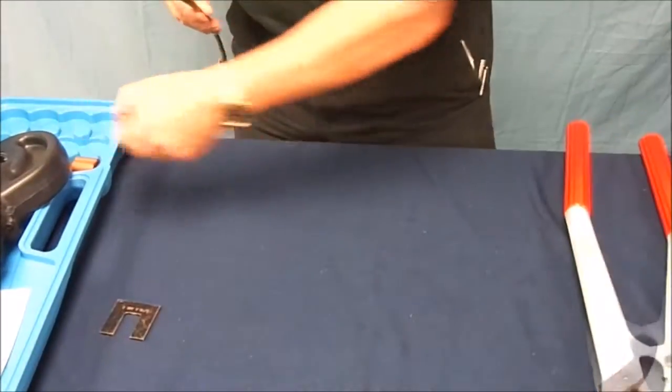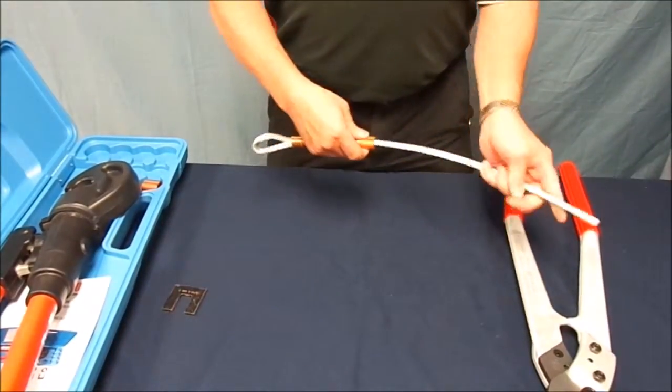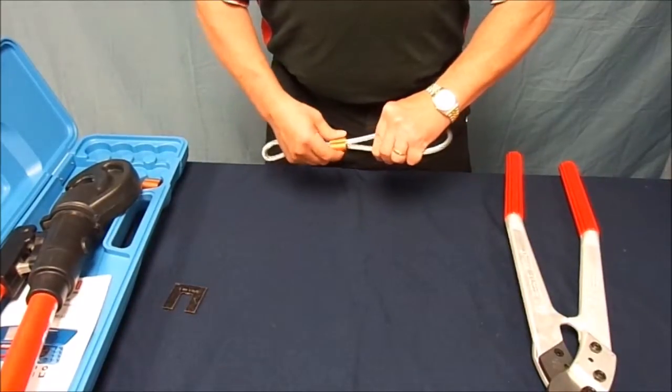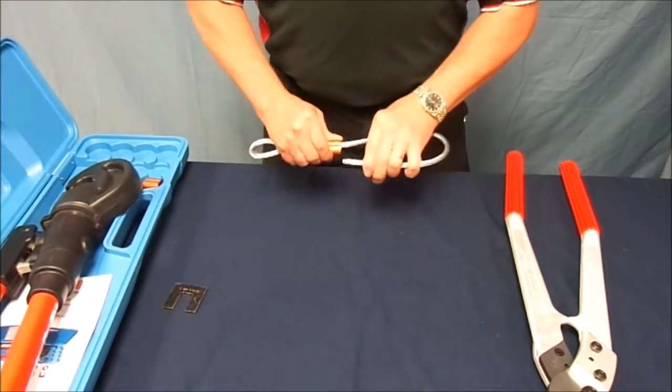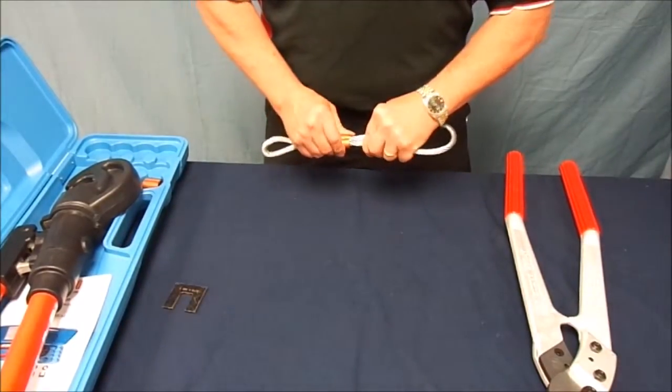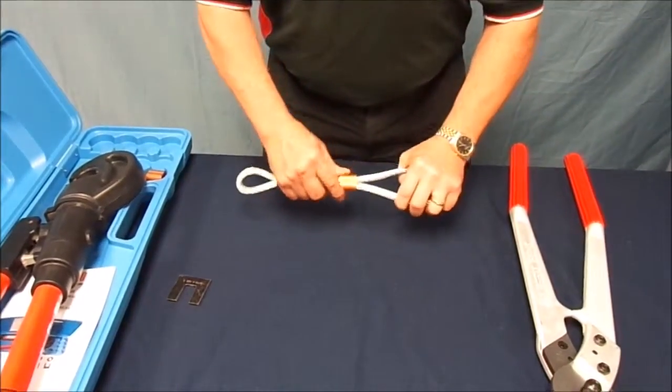For this demonstration, we will be making a loop. Notice how the oval sleeve easily passes over the cable and can easily be formed into a loop. It is important to note that whenever attaching a fitting of this type, that you leave a tail at least one cable diameter protruding from the fitting. This ensures that the cable is compressed over the entire length of the fitting.